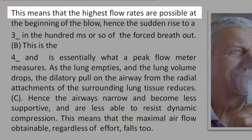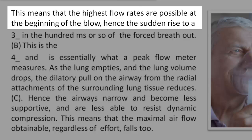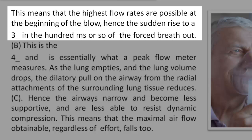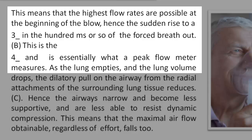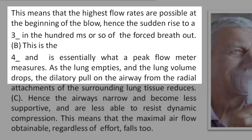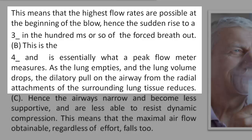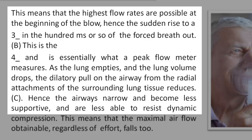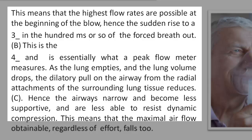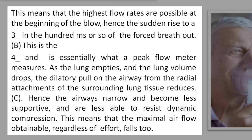Reading 2. This means that the highest flow rates are possible at the beginning of the blow. Hence the sudden rise to a blank [3] in the 100 ms or so of the forced breath out (B). This is the blank [4] and is essentially what a peak flow meter measures. As the lung empties and the lung volume drops, the dilatory pull on the airway from the radial attachments of the surrounding lung tissue reduces (C). Hence the airway narrows and becomes less supportive and is less able to resist dynamic compression. This means that the maximal air flow obtainable, regardless of effort, falls too.